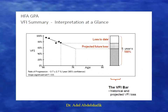In this example, the visual field index was recorded over five times, then a regression line is drawn. Once you have this regression line, you can predict what's going to happen in the next five years. Also, if the regression line is steep, then the patient is at risk of losing good quality of life.